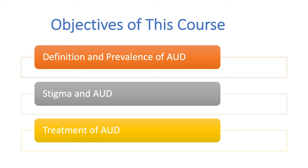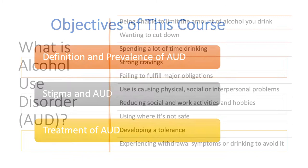The objectives of this course are to understand alcohol use disorder by learning the definition of AUD, its prevalence, the biology of alcohol use disorder, and the stigma associated with it. Further, we'll discuss treatment of alcohol use disorder, covering the idea that there isn't a one-size-fits-all method, harm reduction, and a variety of treatment types. We will discuss innovative treatment paths that go beyond 12-step programs, providing a menu of methods to reduce drinking or abstain based on individual needs.